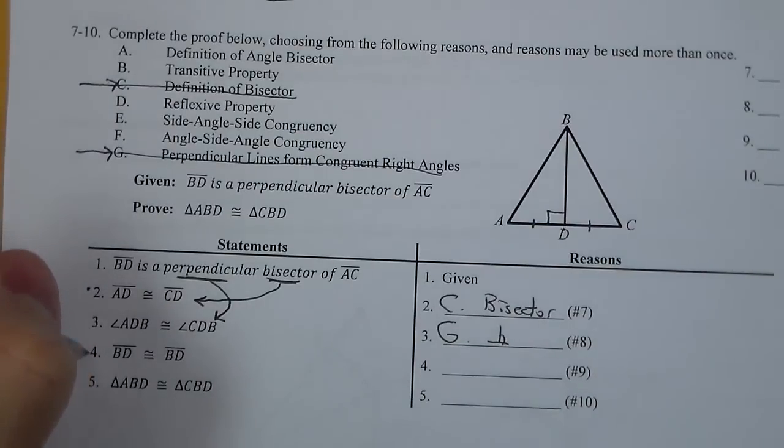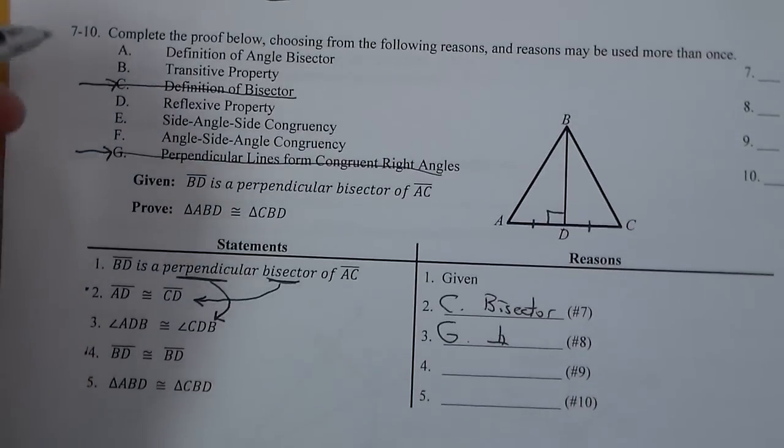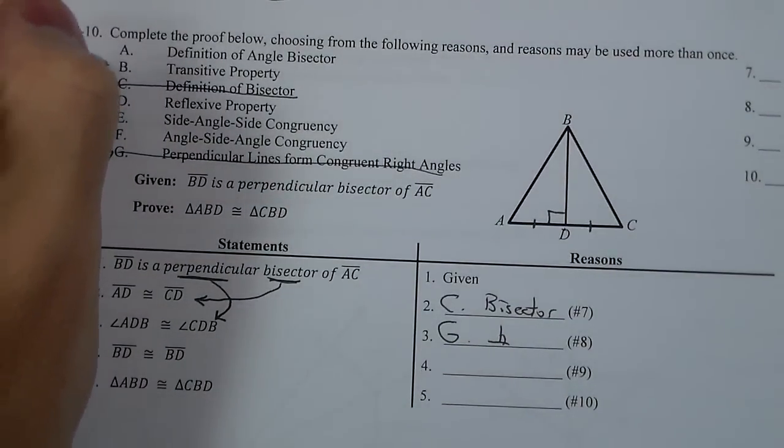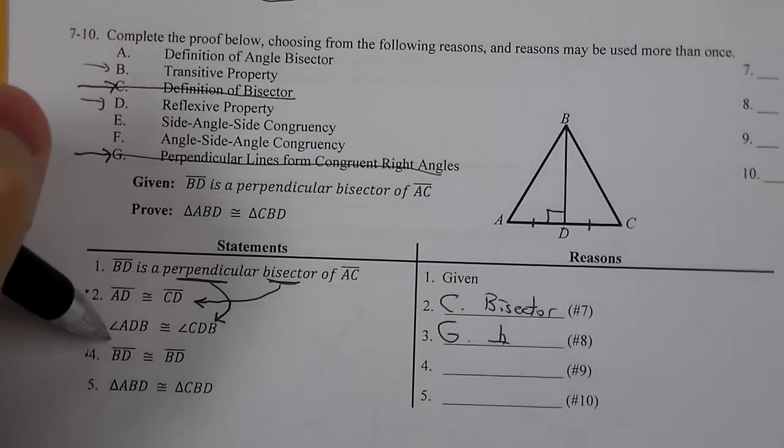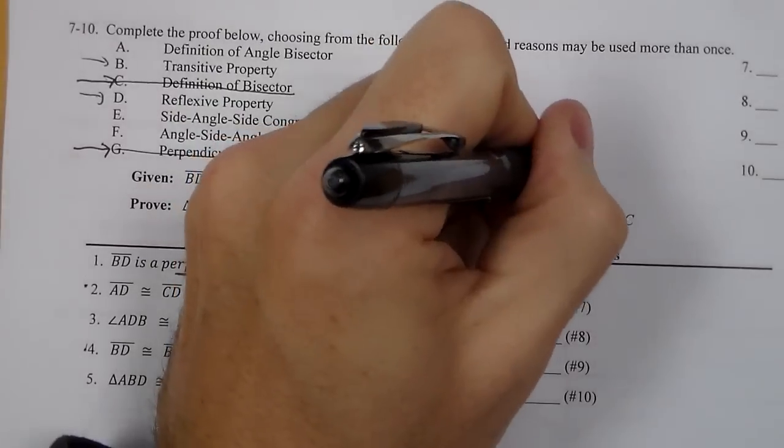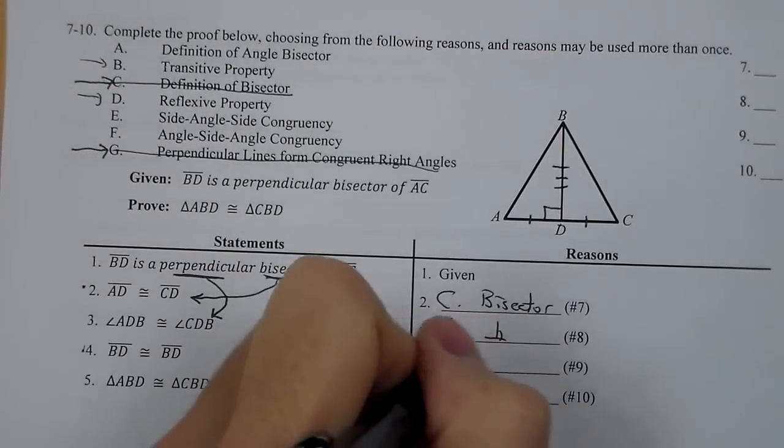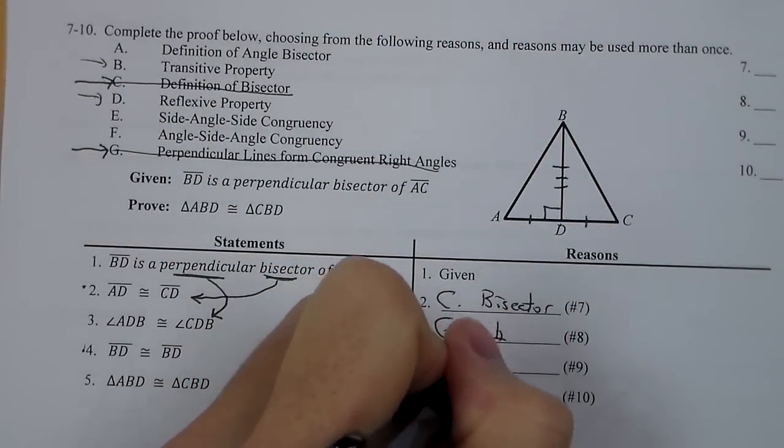Now the next one, BD is congruent to BD. Looking at the multiple choice, it could be transitive property or reflexive property. And these are both here because we have to make sure we keep them separate and use them in the correct way. When it's the exact same thing congruent to itself, we need to know that as being reflexive property. So that will be D.